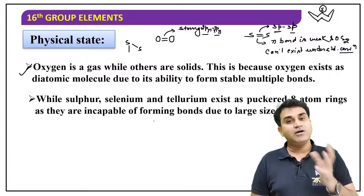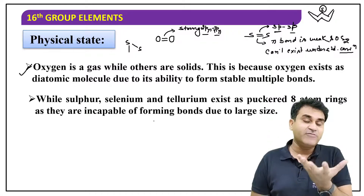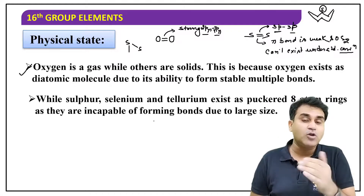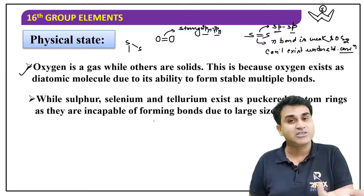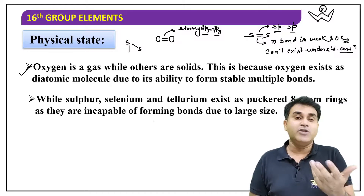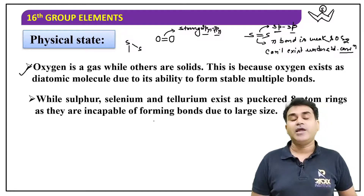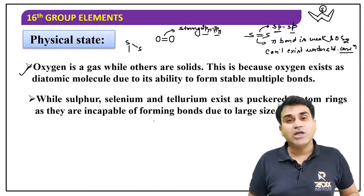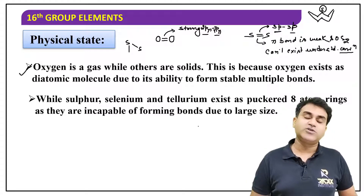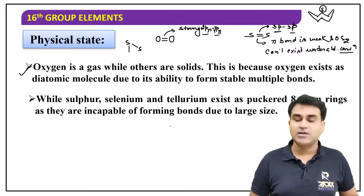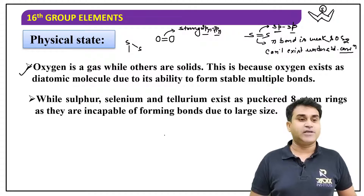Heavier members don't form smaller molecules. Either they form big molecules or they form crystals — like polonium and tellurium form crystals. If it forms a crystal, it will be solid. That's enough for the exam — basic discussion done.